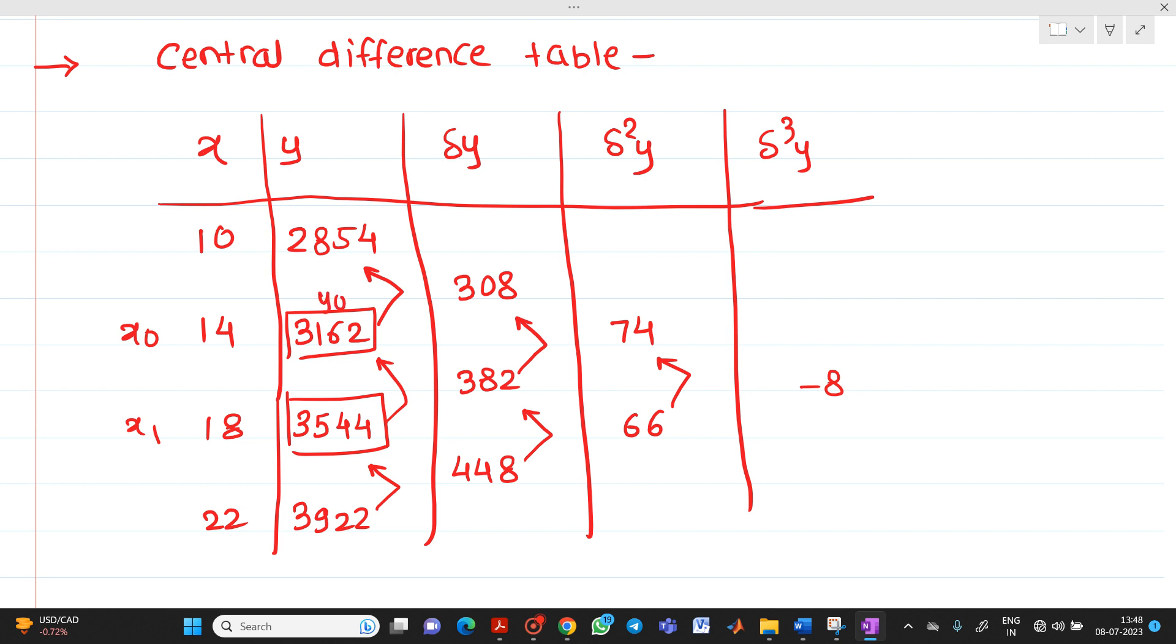So these two values will be what? This is your y0, this is your y1. After that, this value which will be your del y of 1/2. These two values which is nothing but your del square y0 and del square y1. And this is nothing but your next value del cube of y 1/2.